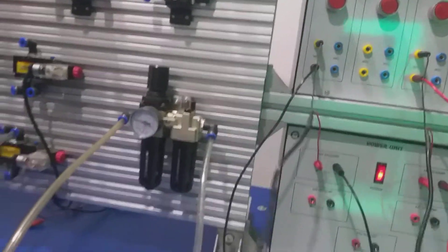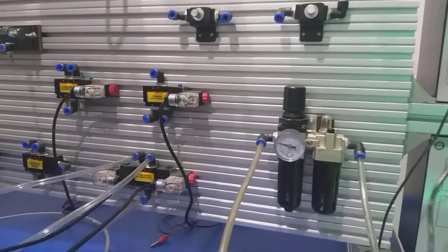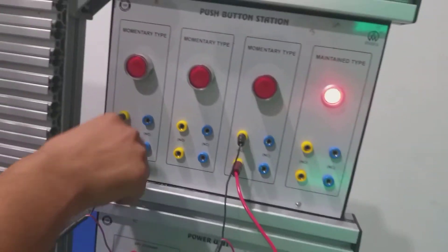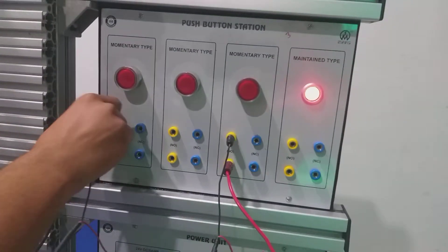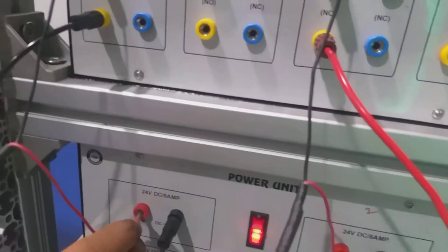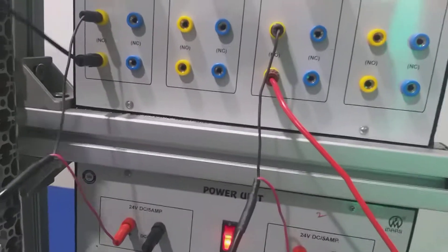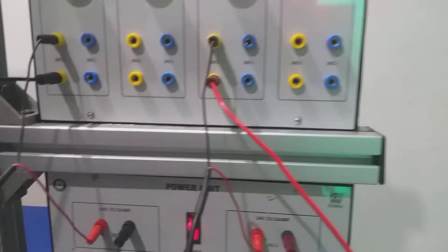There are two wiring cables for the 5x2 way double-solenoid valve. Attach the cables to the push-button and power unit, and connect the power unit and push-button together with this patch cord.